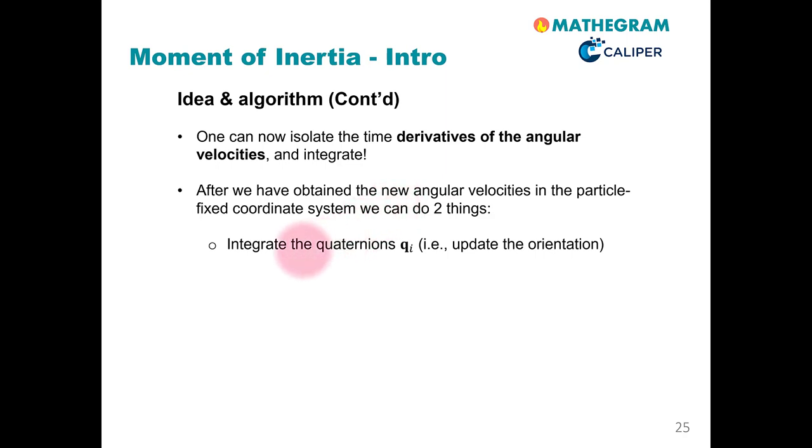First, of course, we would like to update the quaternions to update the orientation of the non-spherical particle. And second, we can use the inverse rotation matrix to obtain the angular velocities ωin in the global coordinate system. And this is what we could have not done before without this smart transformation.